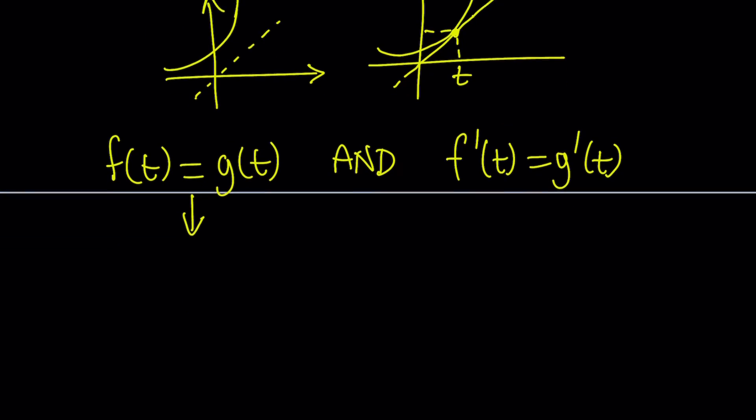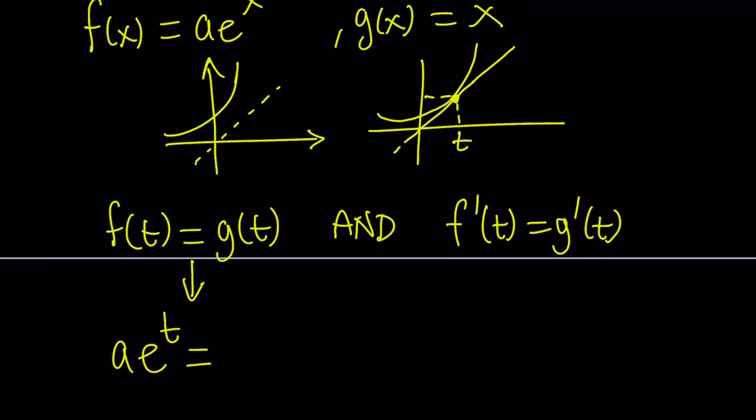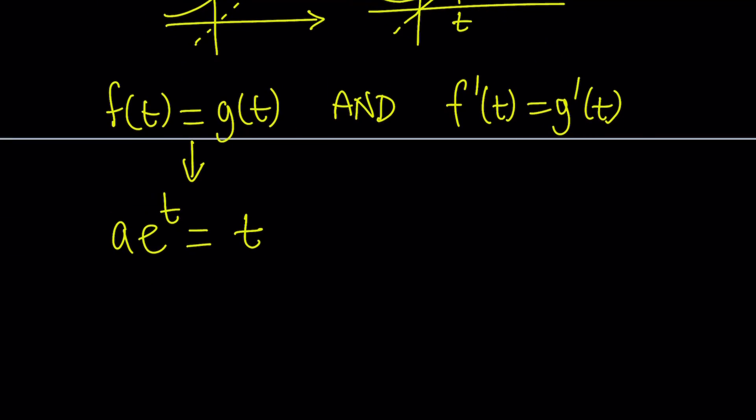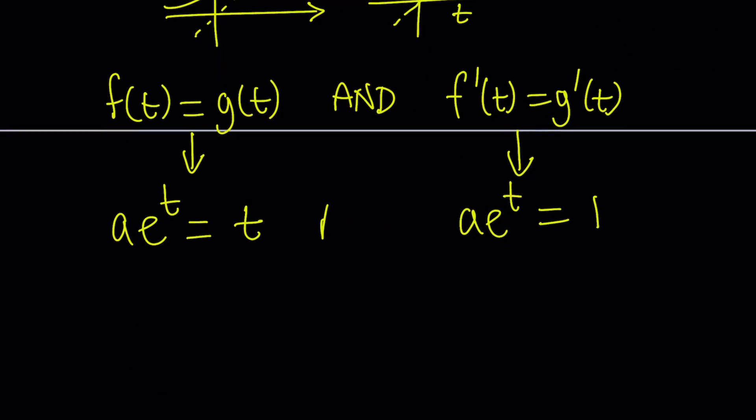f of t is going to be a e to the t. And g of t is just going to be t, because g of x is defined as x. And from here, f prime is going to be the same as a e to the x. And g prime is just going to be one. Because this is a straight line, its slope is going to be the first derivative everywhere. So from here, we get a e to the t equals one. So now we have two equations that need to be true at the same time.